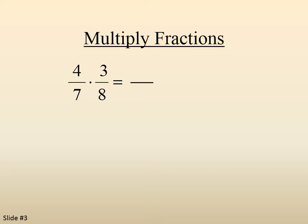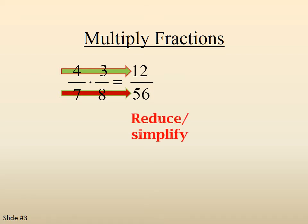Try this one. 4 sevenths times 3 eighths. 4 times 3 is 12. 7 times 8 is 56. But then we notice that the 12 and the 56 are both divisible by 2. So we reduce. And we end up with 6 over 28. But they're still divisible by 2.